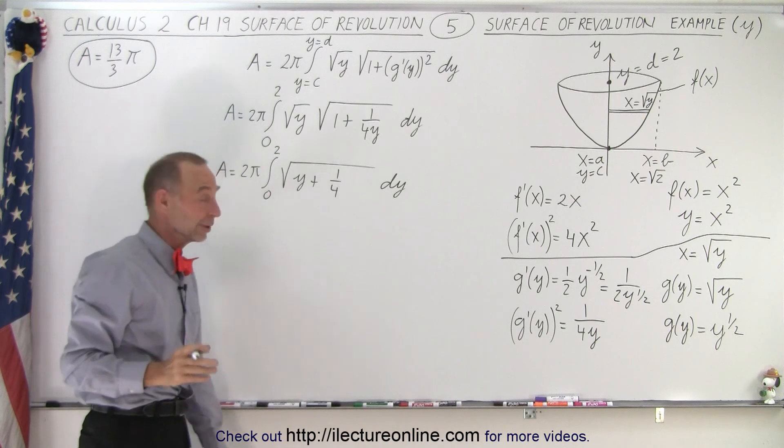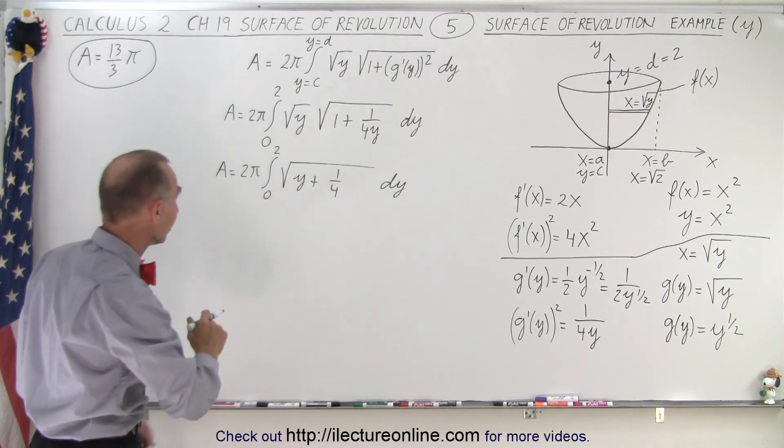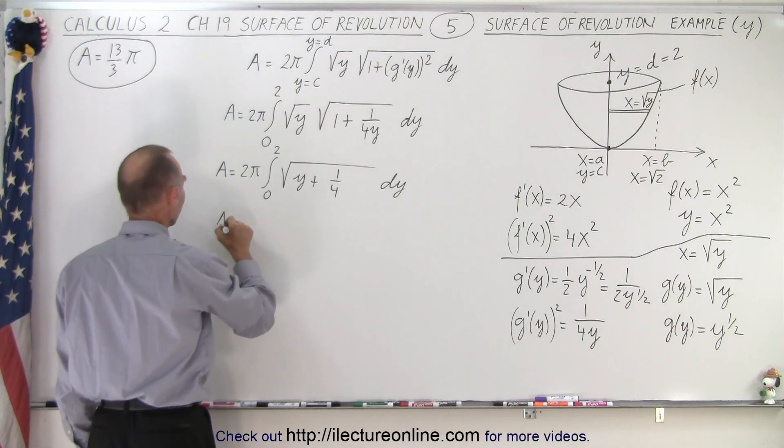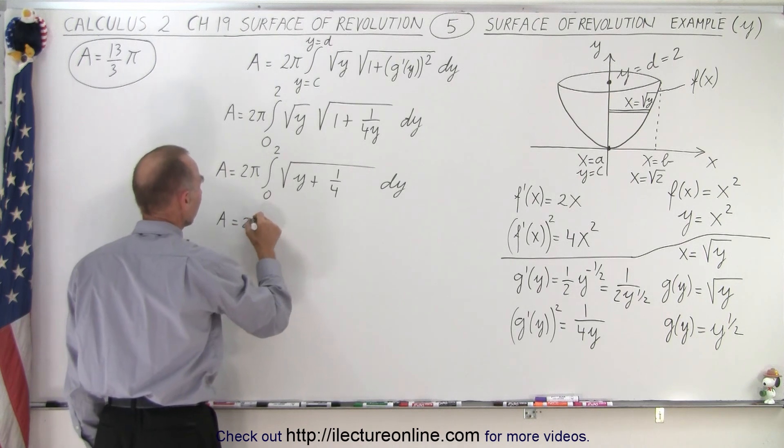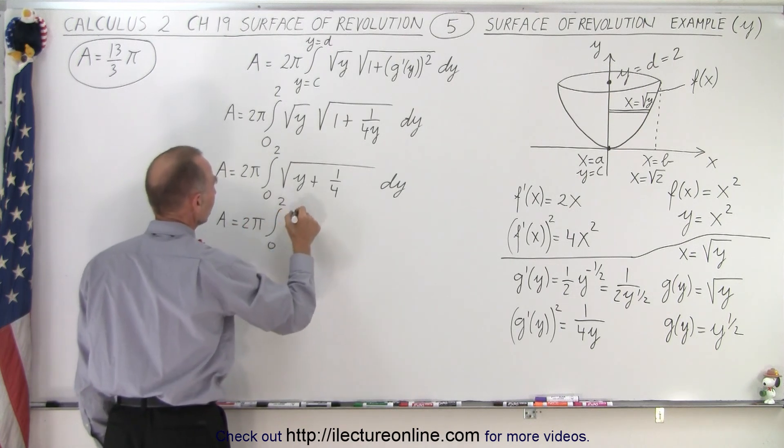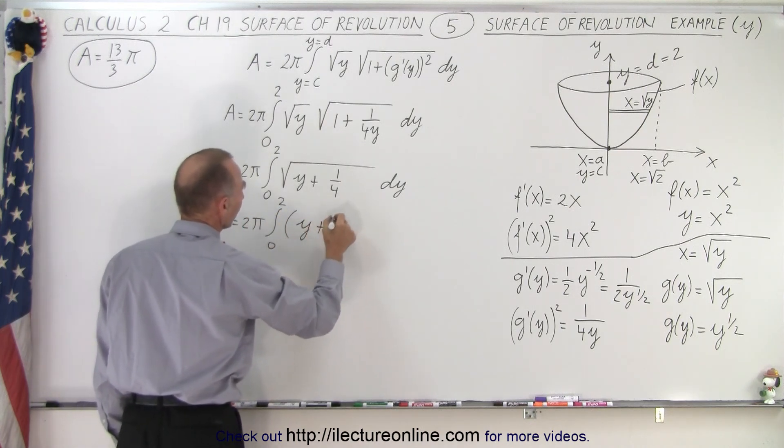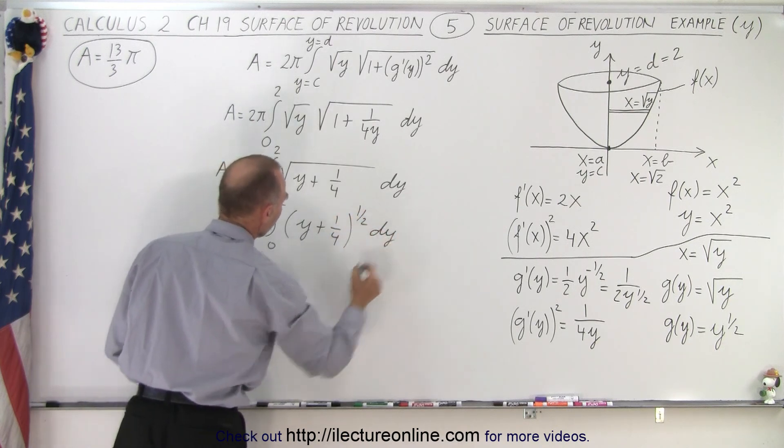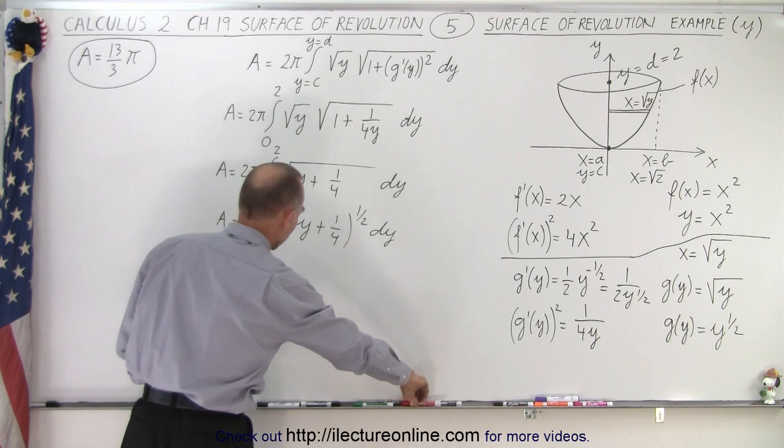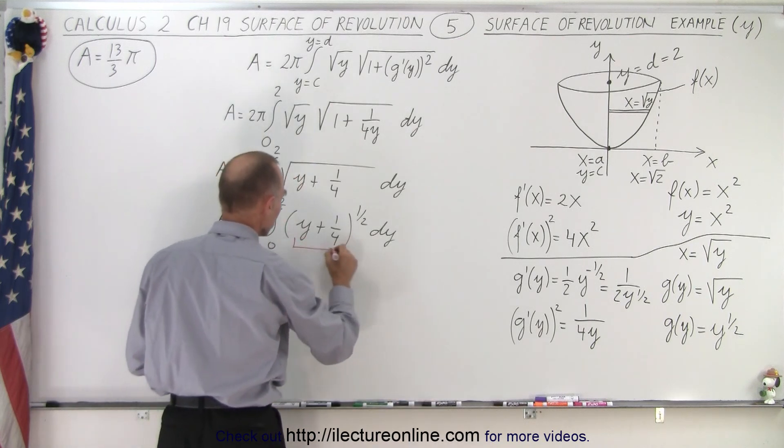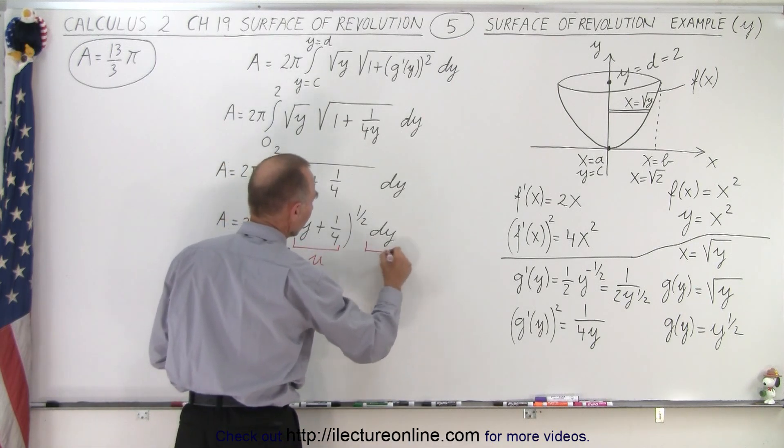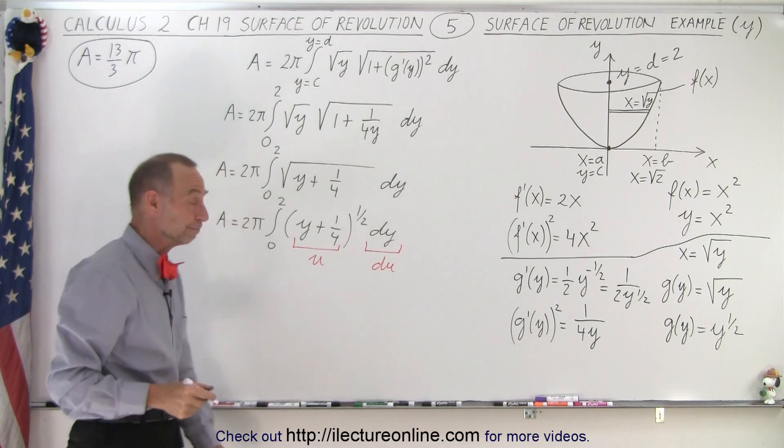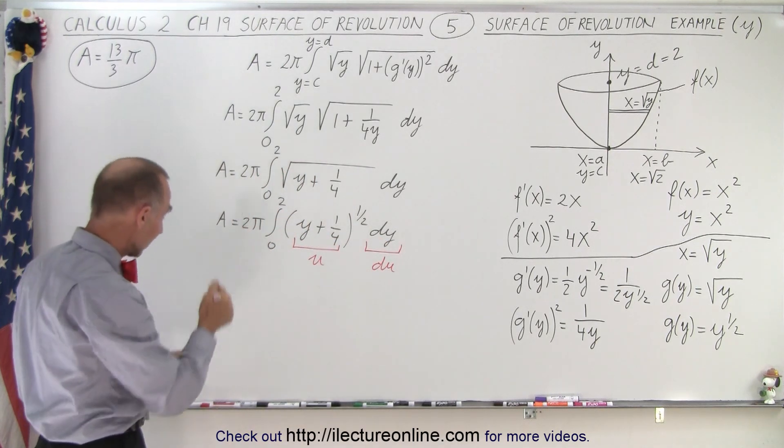Now you breathe a sigh of relief, that's an easy integral. If I write it like this, I have A equals 2 pi times the integral from 0 to 2 times the quantity y plus 1 quarter to the 1 half power times dy. Then I can say, if I call this my u, then this here is my du. This is the differential of what's inside the radical, and that's easy to integrate.